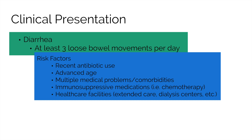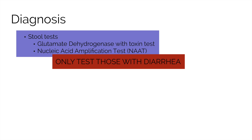How do we diagnose C. diff? We diagnose C. diff based on stool tests, and there are quite a variety available. The two main methods are the glutamate dehydrogenase with toxin test and the nucleic acid amplification test. The glutamate dehydrogenase test involves culturing a stool sample in various growth media; if C. diff is isolated, a test for toxin production is performed. A nucleic acid amplification test detects the genes that produce the toxin created by C. diff. These tests are the most sensitive, though nucleic acid amplification tests have a lower positive predictive value. Remember, only testing patients with diarrhea is far more important than the particular test used, as we do not want to treat people who have C. diff in their normal flora.